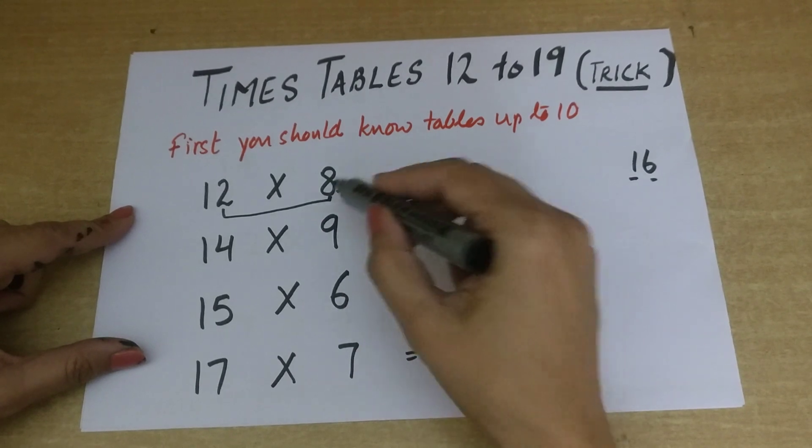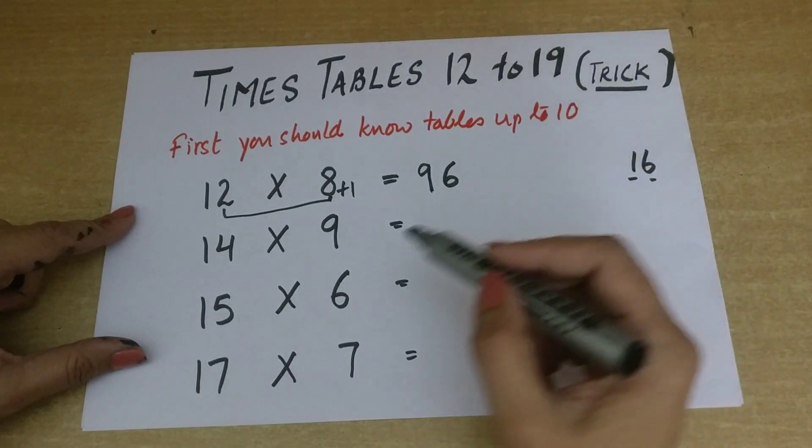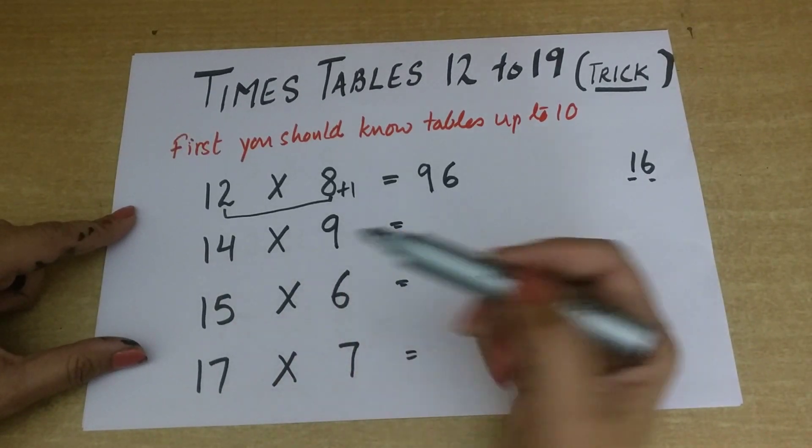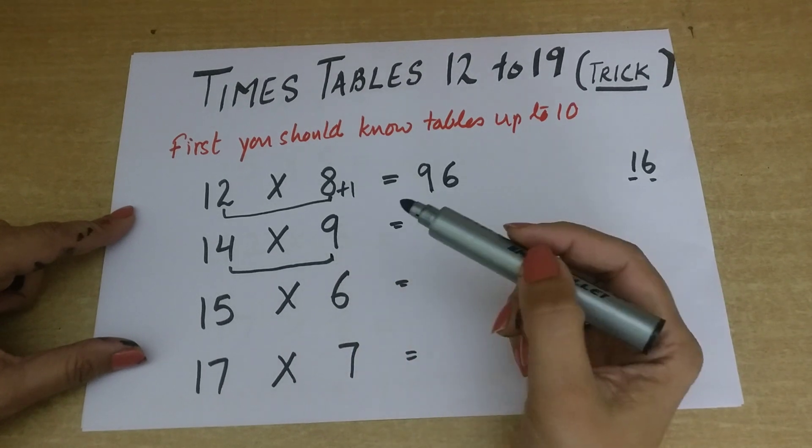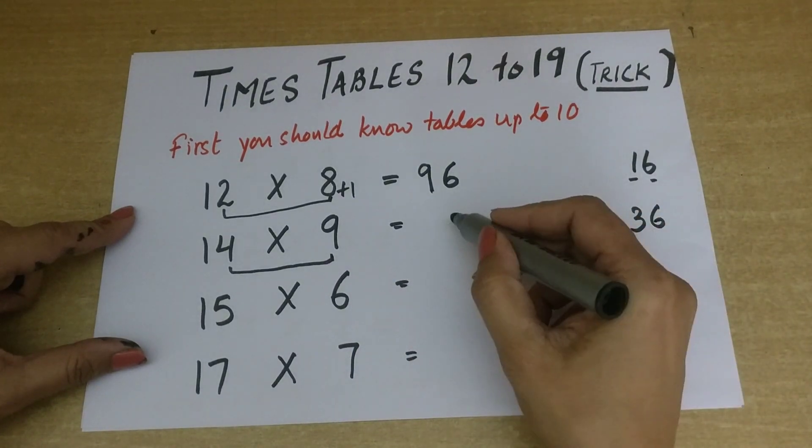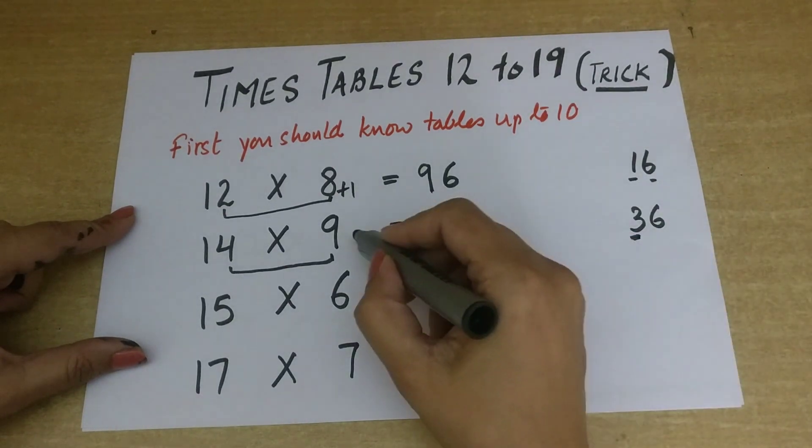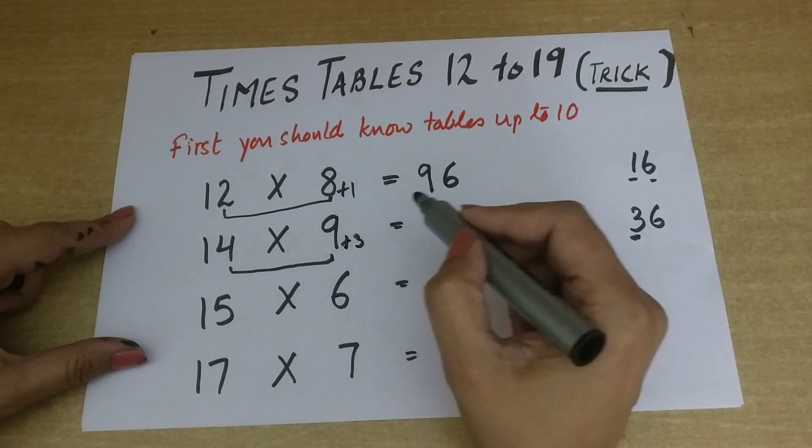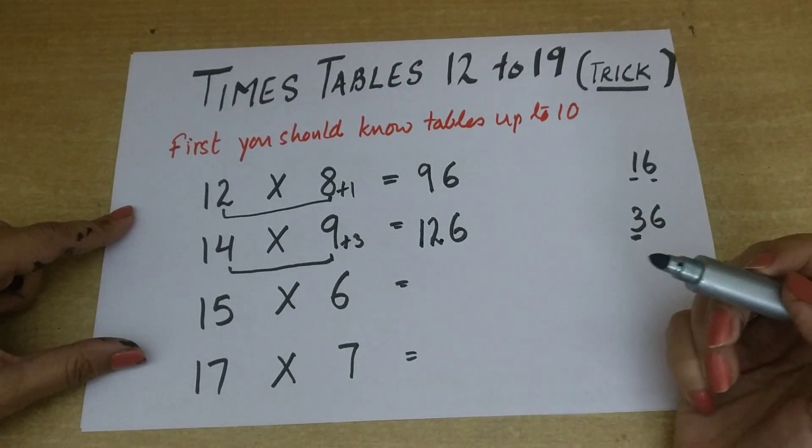So 12 times 8 is 96, so easy. Just two steps. The first thing, what you have to do is 14 times 9. I didn't know, but 4 times 9 I know. I know 4 nines are 36. So I will be writing the ones digit over here: 6. And this tens digit 3 will be added to 9, so 9 plus 3 is 12. So 14 nines is 126.